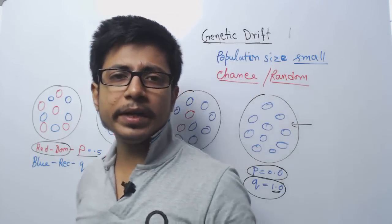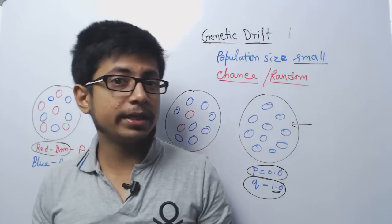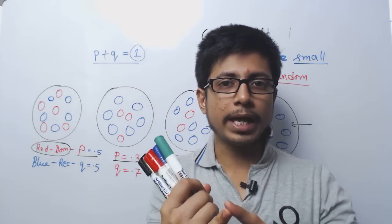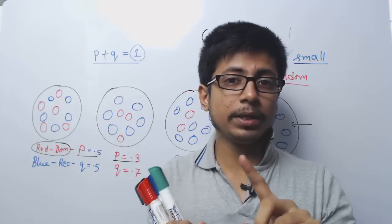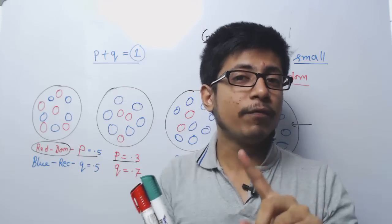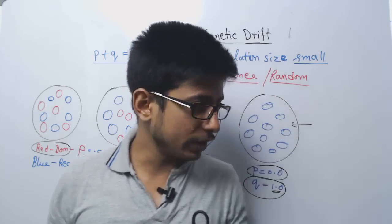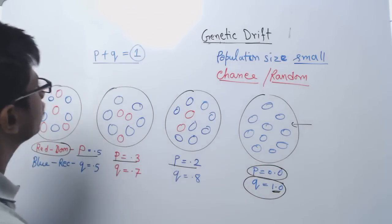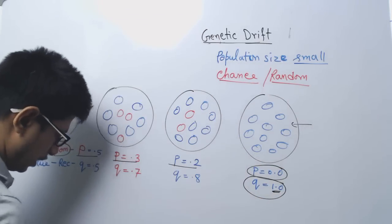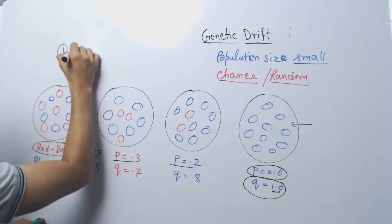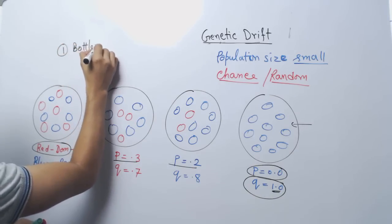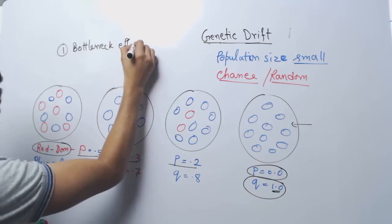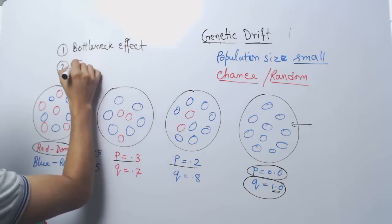There are two types of events associated with genetic drift — two types of genetic drift we can talk about. One is known as the bottleneck effect and the other is known as the founder effect. Those are examples of genetic drift.